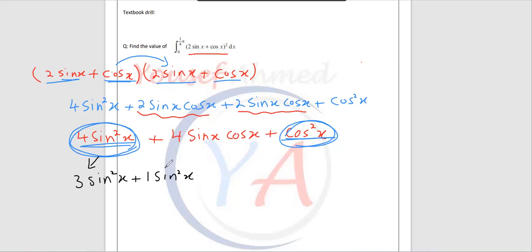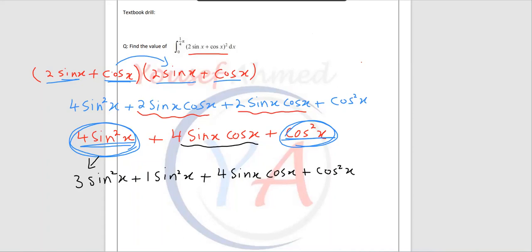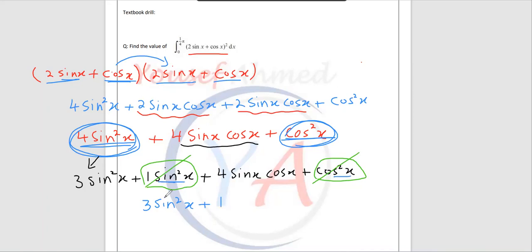I'm doing splitting: add it to 1 sin square x, plus — drop the middle term as it is — 4 sin x cos x, and here we have cos square x. So you can collect this one and this one: 1 sin square x plus cos square x gives you the identity, which is sin square x plus cos square x equals 1. So these can be cancelled and replaced by 1. So now you will have 3 sin square x plus 1 instead of those two terms.